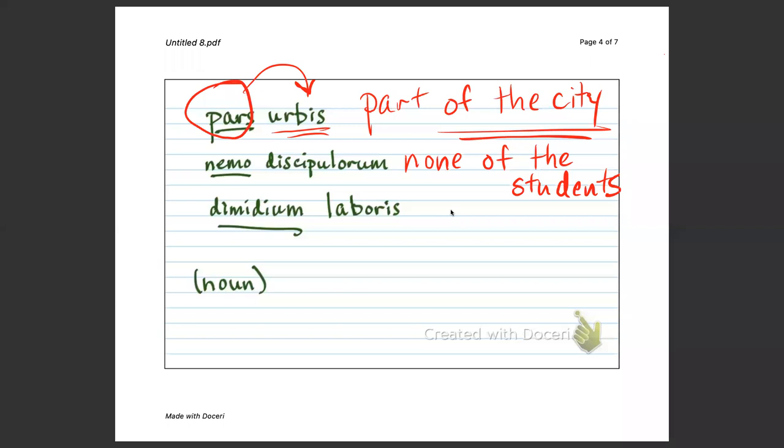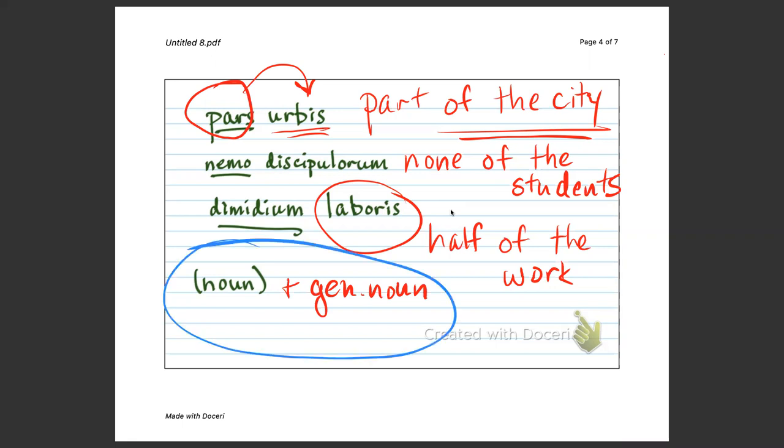And here, half of the work. So, you've got a noun, and then you've got the genitive of the noun. This is the partitive genitive. Paris urbis, nemo discipulorum, Dimidium laboris.